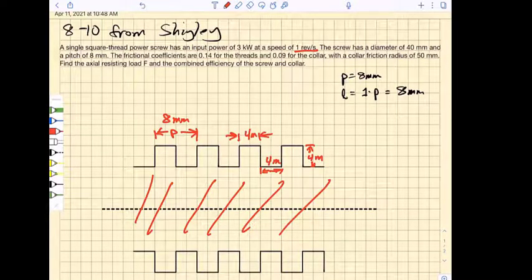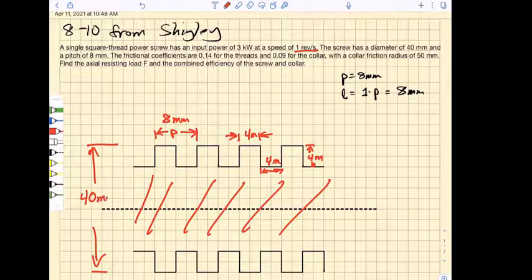There's another thing: it says that the screw has a diameter. The diameter goes to the outermost part of the threads and is specified as 40 millimeters. In order for us to do our calculations, what we need to get at is the median diameter.